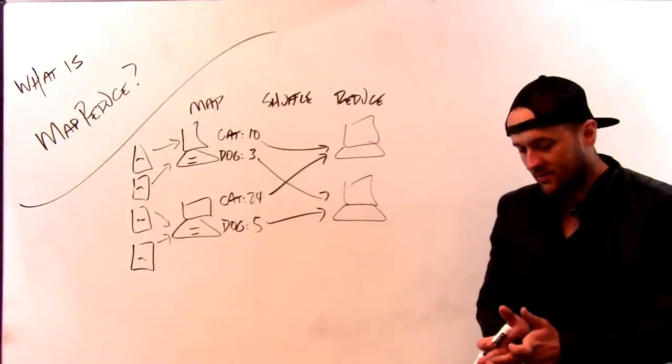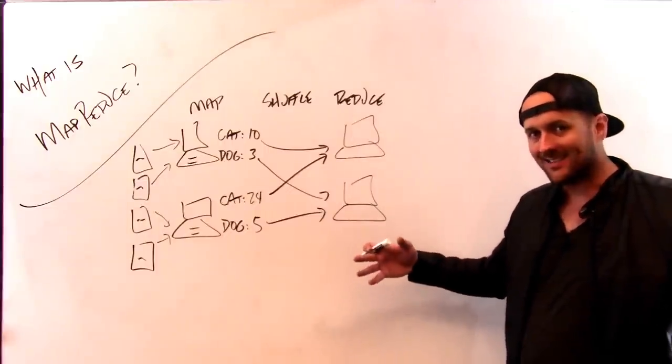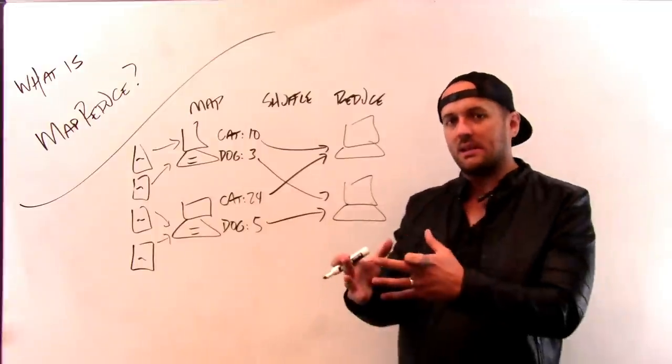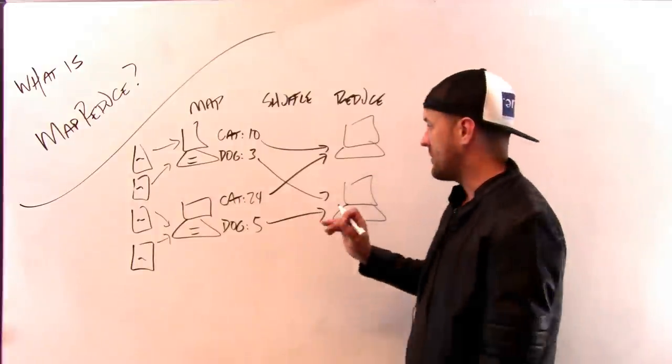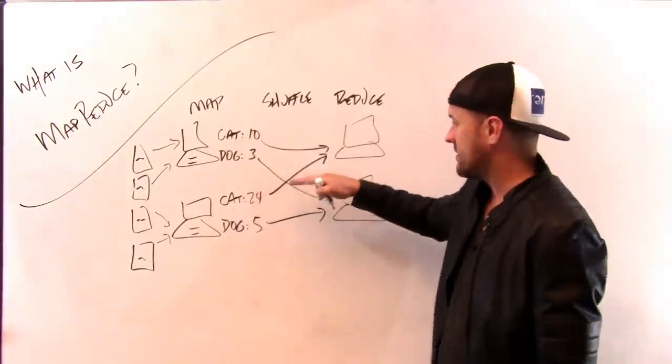Map is the process of splitting all the inputs among a bunch of machines, and then reduce takes the results from the map stage and combines them together to get the one result that I'm looking for. So in this case, what I would do is I would combine cat and cat, so ten plus twenty-four.